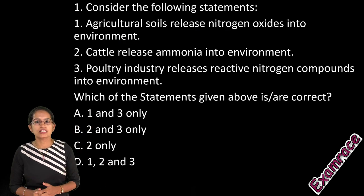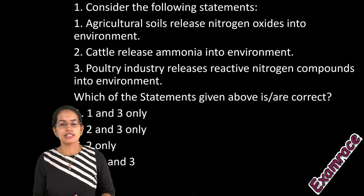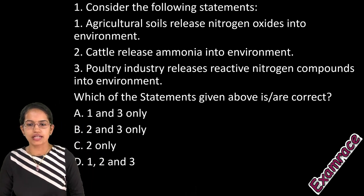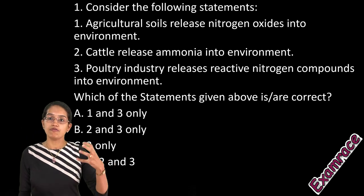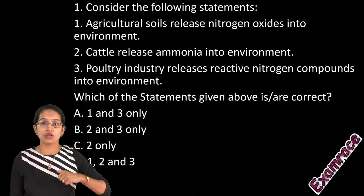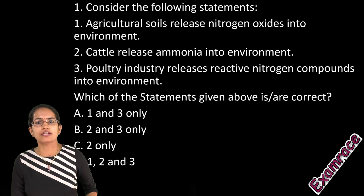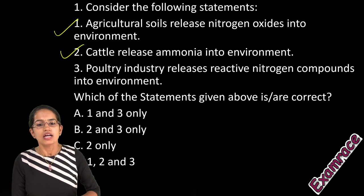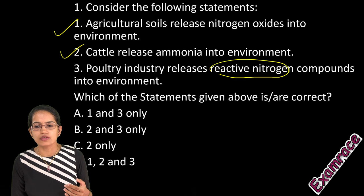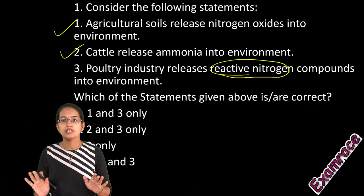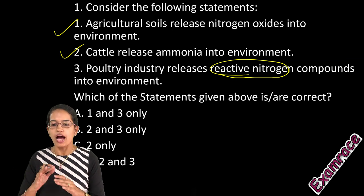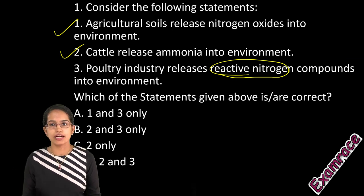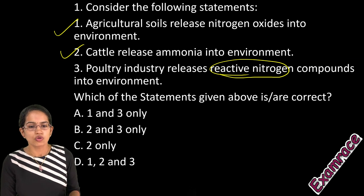The first question talks about the nitrogen content in the atmosphere. Agriculture releases a lot of nitrous oxides into the environment. For poultry, a higher consumption of protein leads to higher release of ammonia into the atmosphere — reactive nitrogen. Nitrogen by nature is inert, but reactive nitrogen in the form of ammonia and ammonium is released through agriculture, poultry, and livestock. So all three statements are correct.